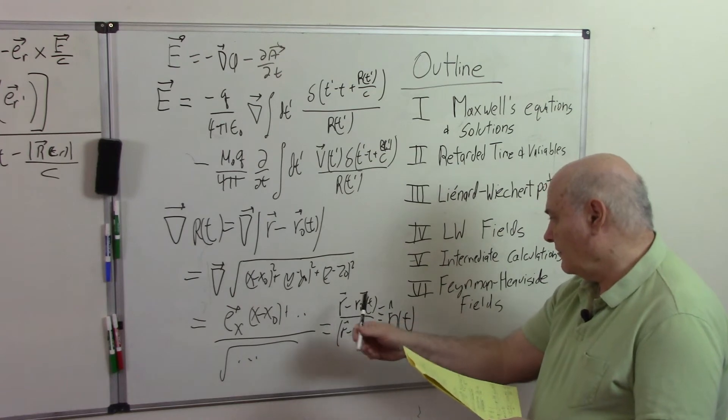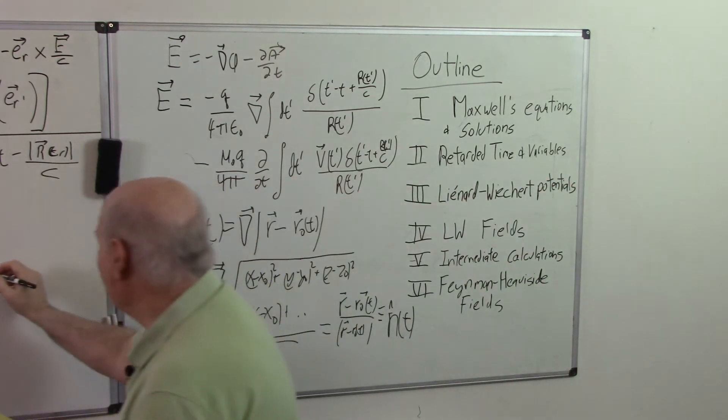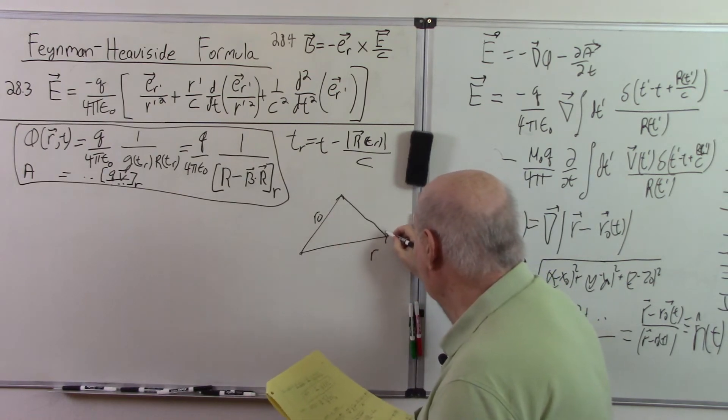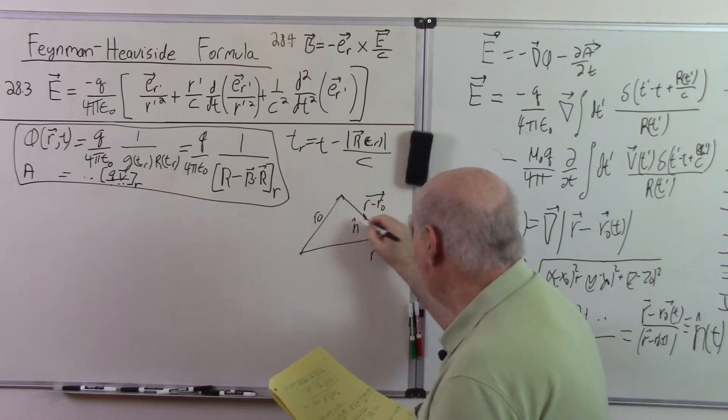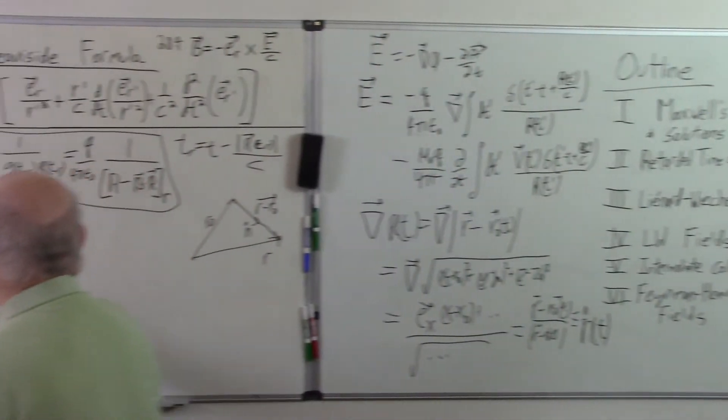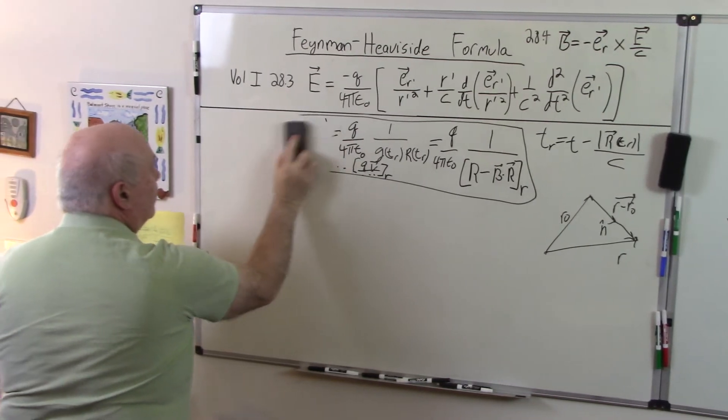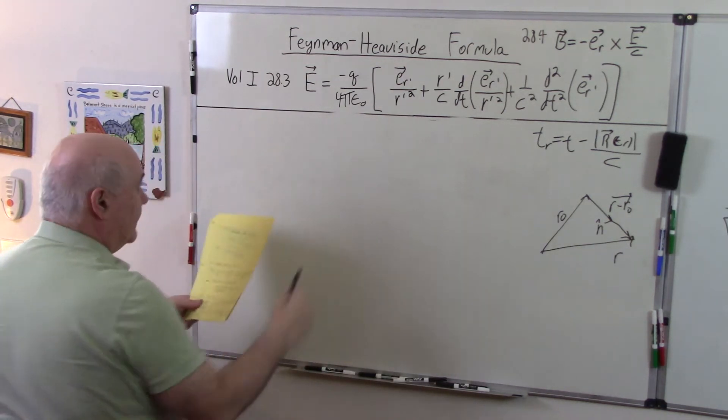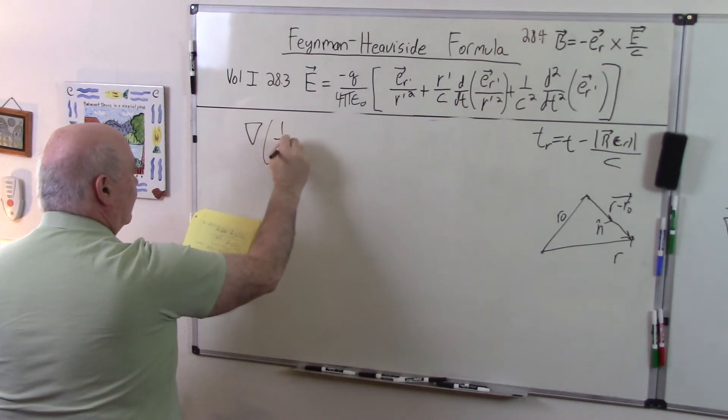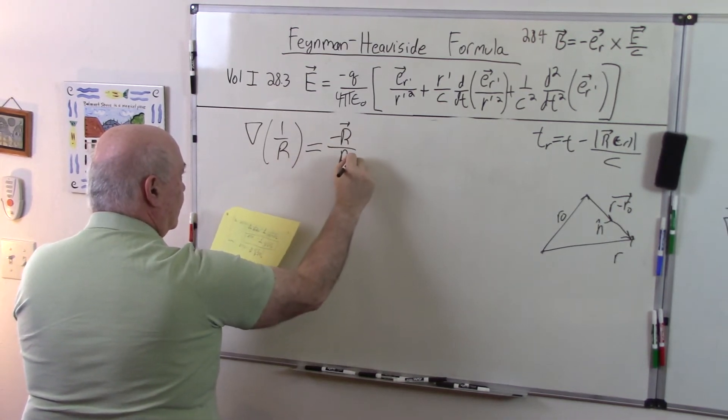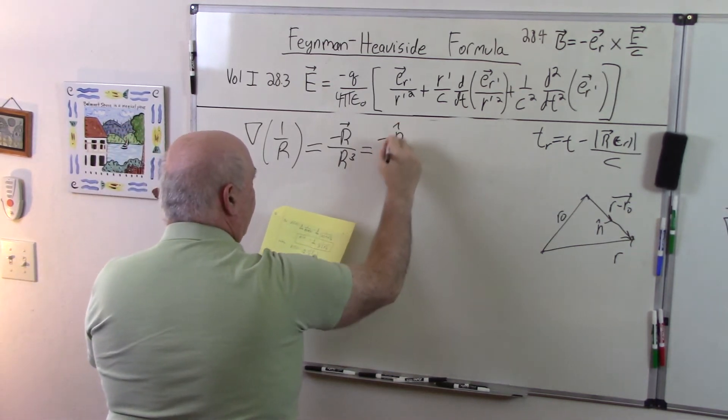And it's toward the field point. If you remember, we had a picture like this. This was R zero, this was our field point R. So this would be R minus R zero, and this would be like a unit vector N carat like that. Using the same methodology, the gradient of one over R, as I'm sure you all know, is minus R over R cubed. This is equal to minus N carat over R squared.